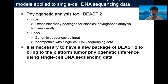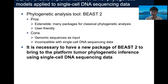There are several tools to perform phylogenetic analysis. For example, BEAST2. BEAST2 has many advantages: it is easily extensible, it has many packages for classical phylogenetic analysis, and it is also user-friendly. However, BEAST2 only accepts genomic sequences as inputs, and it is incompatible with single-cell DNA sequencing data. Therefore, it is necessary to have a new package for BEAST2 to bring to the platform tumor phylogenetic inference using single-cell DNA sequencing data.